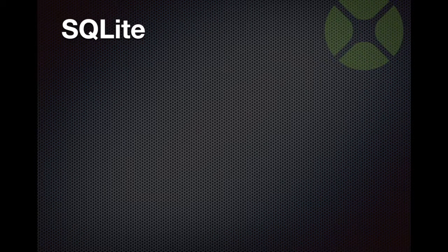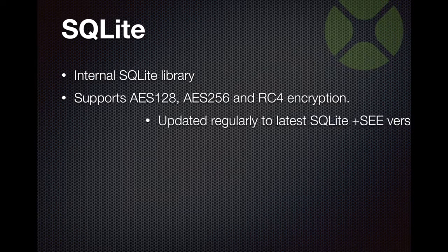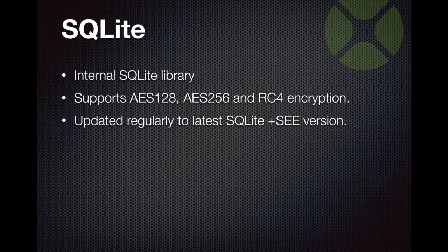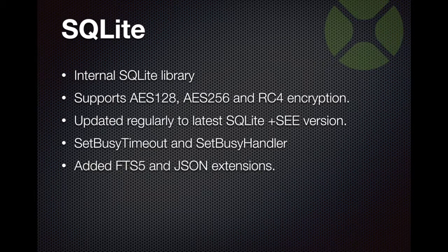For SQLite, we have some extra features. First, we include an internal SQLite library that supports encryption via AES with 128 and 256 bit, and RC4 encryption. We regularly update our internal library to the latest SQLite versions available. You can set timeouts and a busy handler to avoid your app waiting long when the database can't be written because it may be in use by another process. We also enable extensions for full text search and JSON.